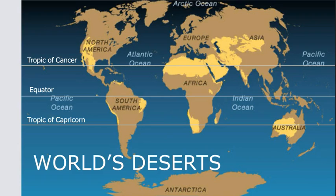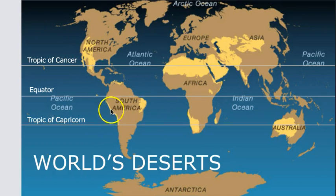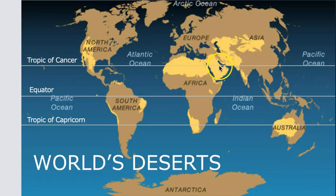Descending air happens near the Tropic of Cancer and the Tropic of Capricorn, and in the rain shadow of mountains. On this map, the warm deserts are indicated by the yellow shaded areas for North America, South America, Africa, Asia, and Australia. In this lecture, the deserts we're going to focus on are those in the southwestern part of North America.